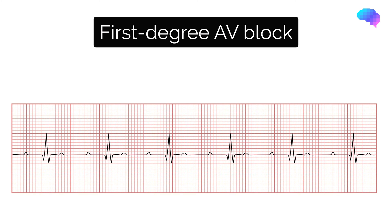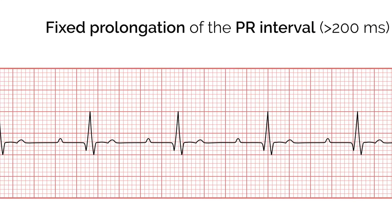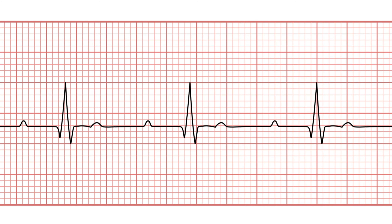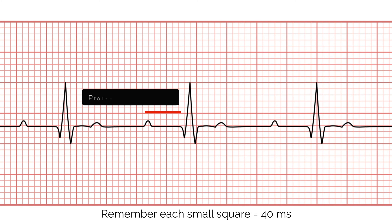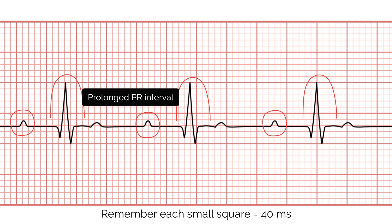First degree AV block involves the consistent prolongation of the PR interval, defined as being greater than 200ms. This is due to delayed conduction via the atrioventricular node. If we look at the ECG, we can see that every P wave is followed by a QRS complex and there are no dropped complexes.